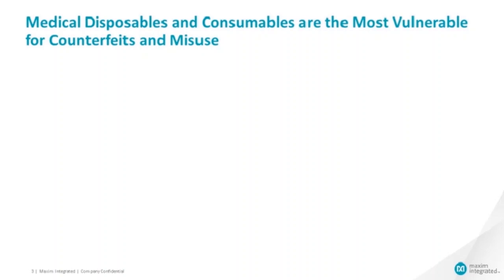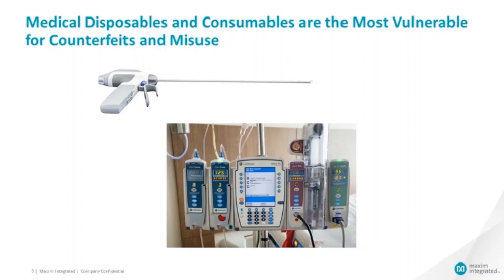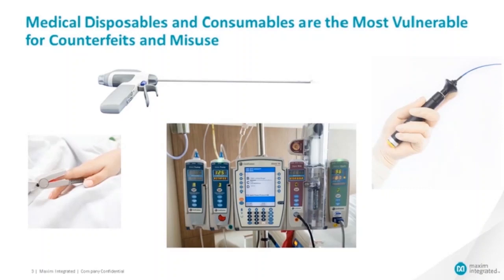Let's think about products that are most vulnerable to counterfeiting and misuse. For example, I'm showing here a surgical tool used for ablation, an infusion pump with cartridges that hold pharmaceuticals, sensors, and a catheter. These are all items that typically come into contact with a human, and they're also high targets for the aftermarket — they could be high volume, high value. These are devices where we want to consider adding security to protect them.